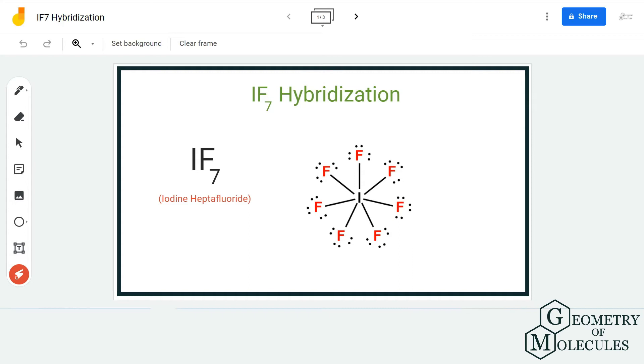Hi guys, welcome back to our channel. In today's video we are going to help you determine the hybridization of IF7 molecule, the chemical formula for iodine heptafluoride. While there are so many ways to find out the hybridization and geometry of molecules, we use the easiest way to find it out.